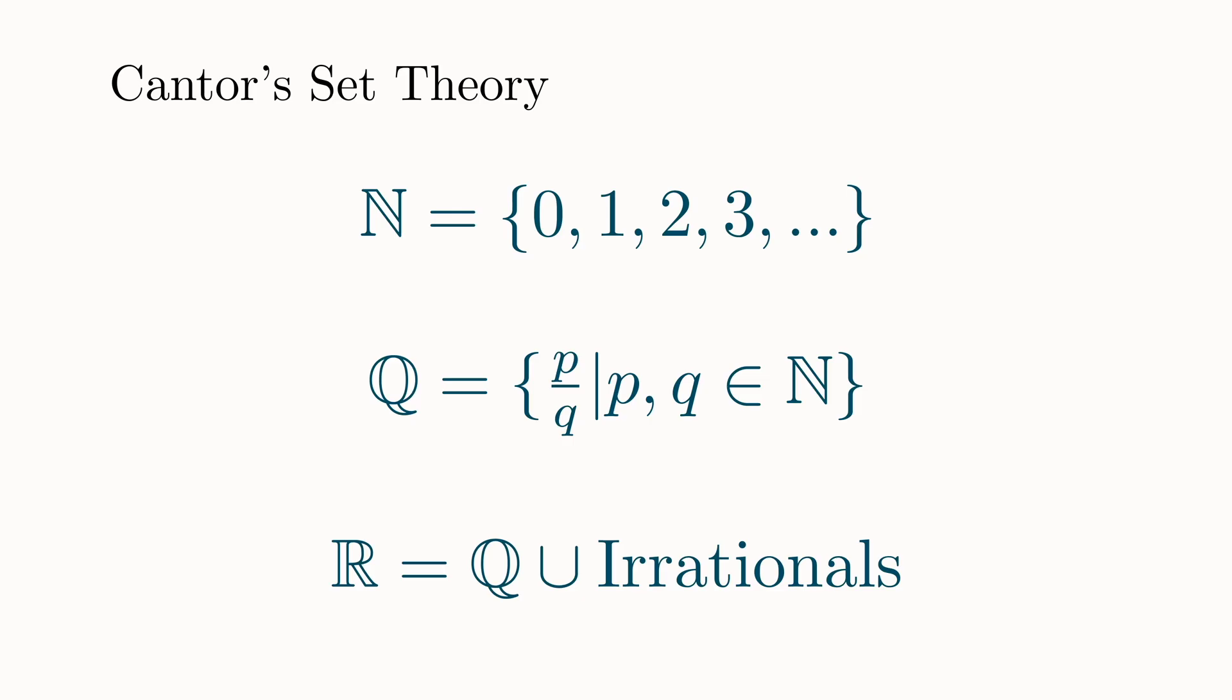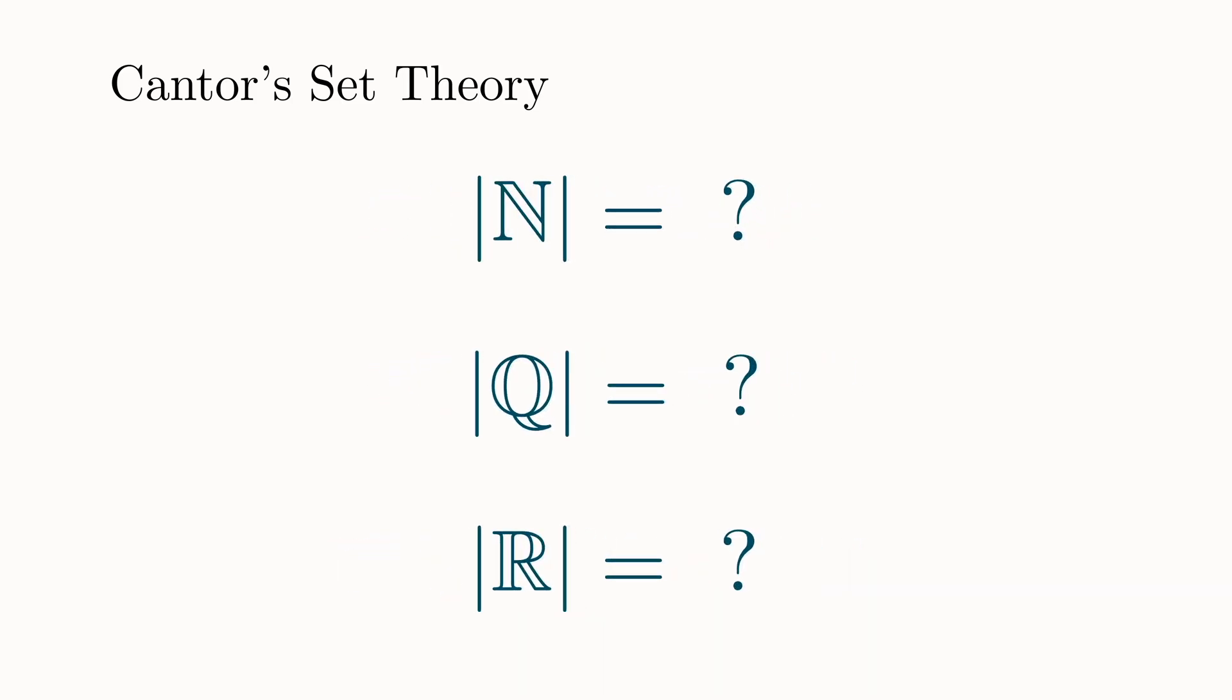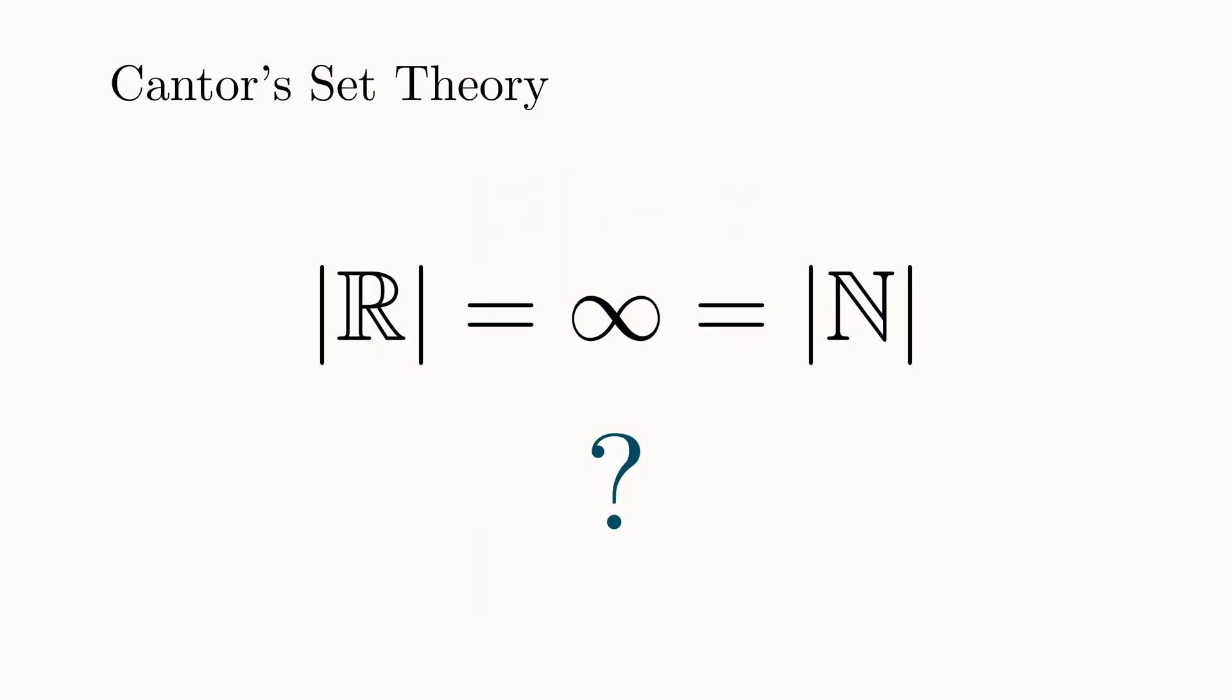For a finite set, the cardinality is just the number of elements in the set. But what is the cardinality of the natural numbers? Infinity? He knew that there were an infinite amount of real numbers as well. So did these two sets have the same cardinality, or are some infinities greater than others?